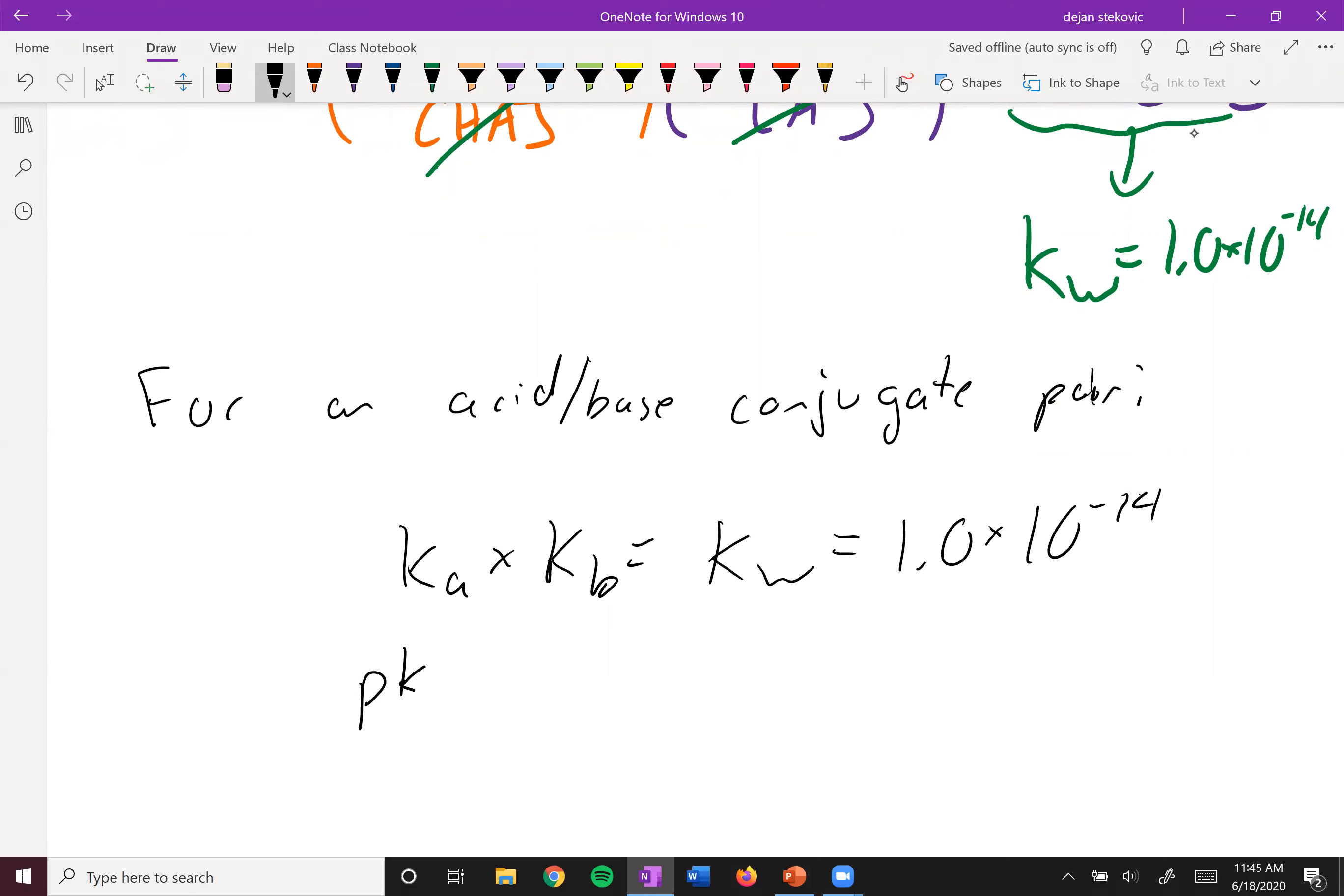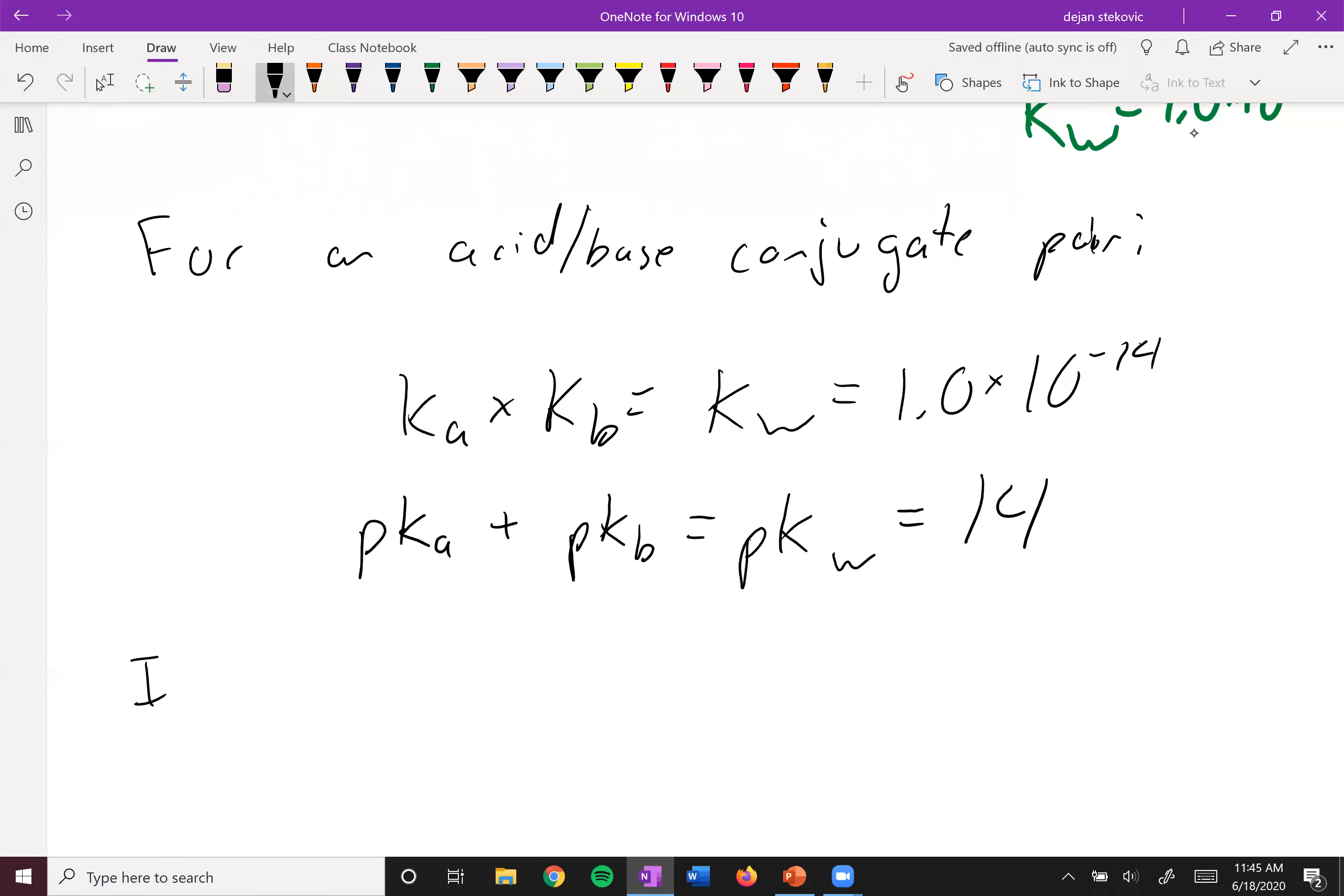And then also PKA plus PKB is going to be equal to PKW, which is equal to 14. So you can see if you know one of these, you know the other. So let's just write that out. If you know KA slash KB of a conjugate acid base pair, you can find the other value.